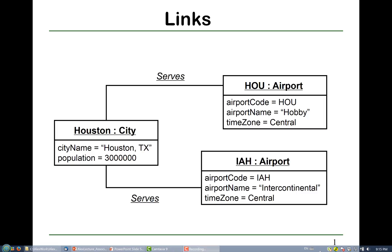We use links to model the relationship among objects. For example, for this city object Houston and this airport object HOU, they have a relationship that HOU airport serves city Houston. Similarly, for this city object Houston and this airport object IAH, they have a relationship that IAH airport serves city Houston.